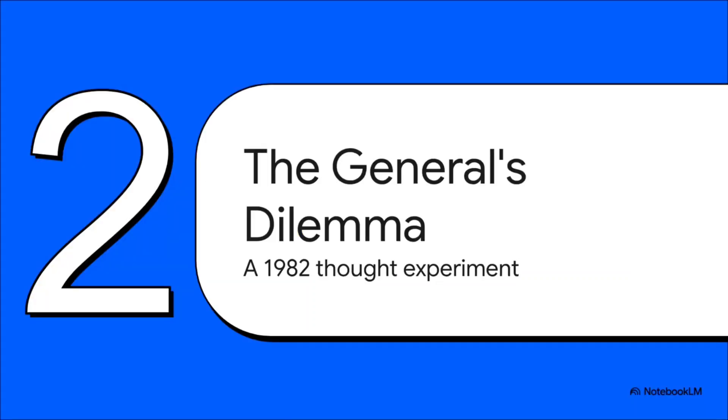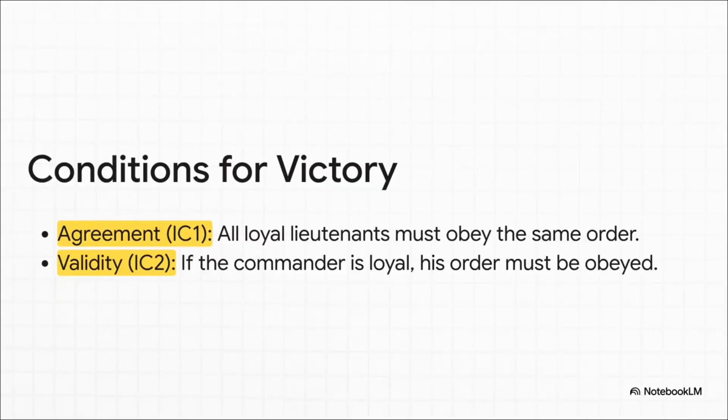To solve this mess, three computer scientists—Leslie Lamport, Robert Shostak, and Marshall Pease—did something brilliant back in 1982. They created a story, a powerful analogy, about a group of Byzantine generals surrounding a city. They all need to agree on a battle plan, but here's the catch: they know some of them might be traitors. For the loyal generals to have any chance of winning, their communication system had to guarantee two absolutely critical things.